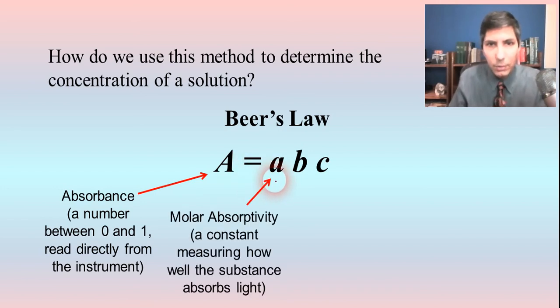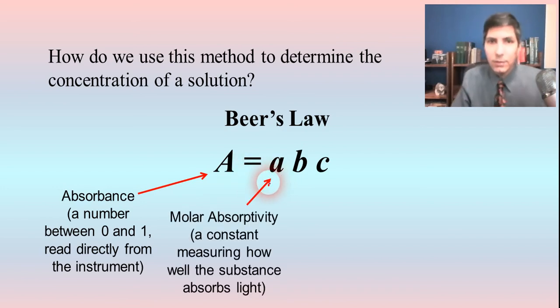So that's the number that we're getting off of the spectrophotometer. Now, this little a, this lowercase a, is a constant. This is called the molar absorptivity. And the molar absorptivity is a constant that measures how well the substance absorbs light. And since it's a constant, it's probably going to have some funny units. The units for molar absorptivity usually are going to be reciprocal molarity, reciprocal centimeters. Okay, so sometimes this will be a very large number, sometimes a not so large number, that those will usually be the units that you have for that.